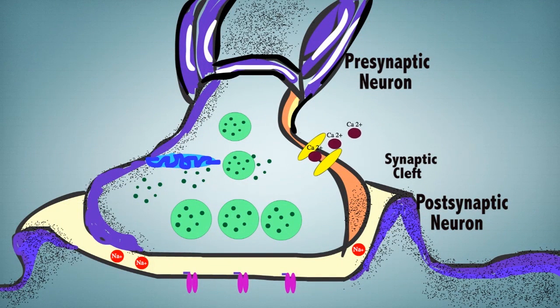The calcium ions that enter the presynaptic neuron bind to the receptors on the vesicle. The vesicles containing the neurotransmitters fuse with the presynaptic neuron terminal.